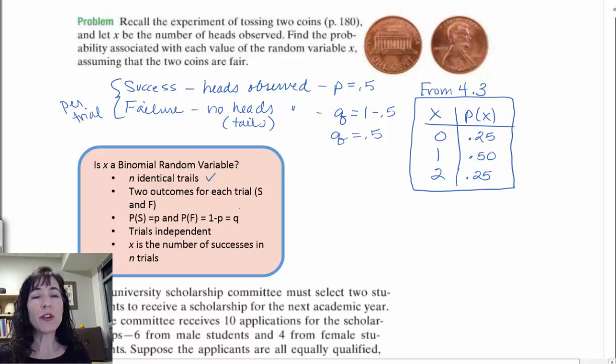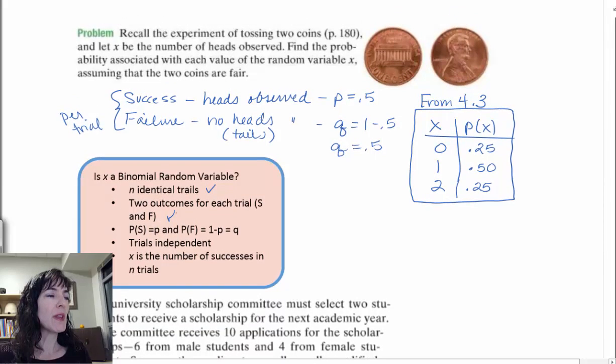And then, are there two outcomes? Well, we defined them right up here. So we know that the two outcomes are success and failure. Success is if we observe a head. Failure is we did not observe a head. So that also holds true. And then, we want to say, do we have the probability of success and the probability of failure defined? And can they be defined? And we do. We've showed them up here. The probability of success is 0.5. Probability of failure or no heads is also 0.5.